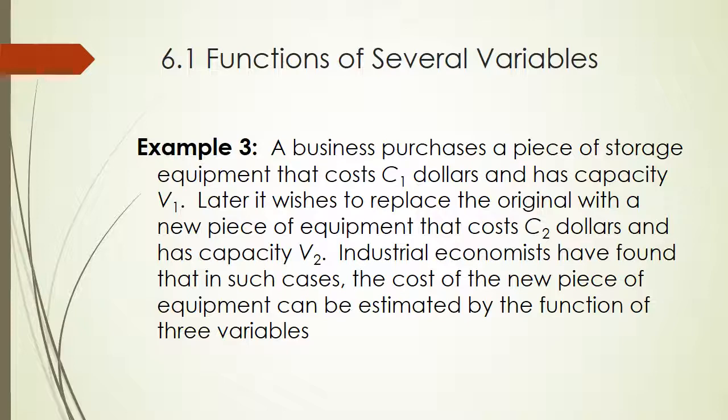Here's another example. A business purchases a piece of storage equipment that costs C1 dollars, has capacity V1. Later, it wishes to replace the original with a new piece of equipment that costs C2 dollars, and has capacity V2. Industrial economists have found that in such cases, the cost of the new piece of equipment can be estimated by the function of three variables. So the new cost is V2 over V1 to the 0.6 power times C1.